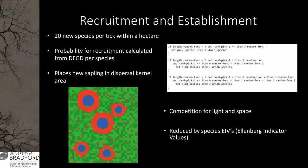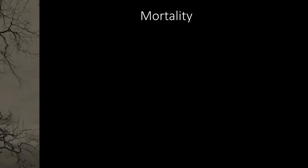Competition for light and space is modelled in terms of neighbouring trees. These are further reduced by EIVs — Ellenberg Indicator Values. These are not quantitative but qualitative assessments of species variables of how they can grow with specific parameters. For this model it's the EIV for light — how light affects them — so one could be completely shade-tolerant, and ten is essentially the complete opposite. These are reduced slightly in order to just reduce the growth in terms of competition effects.